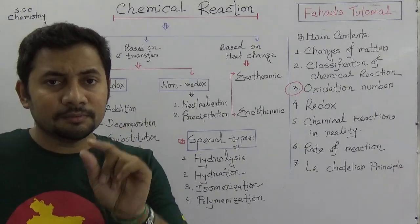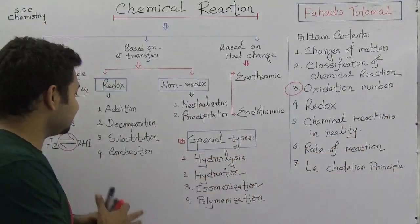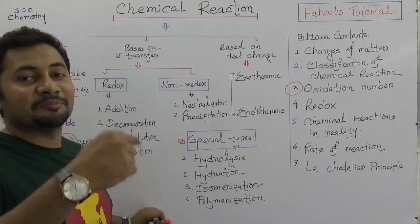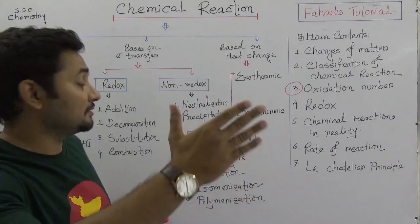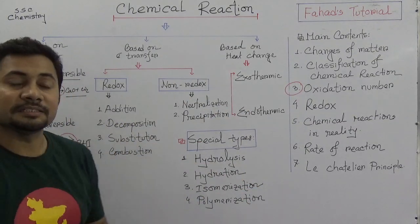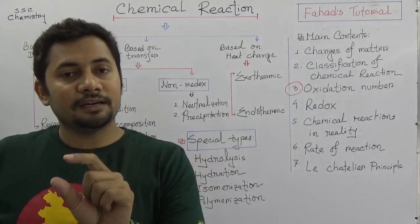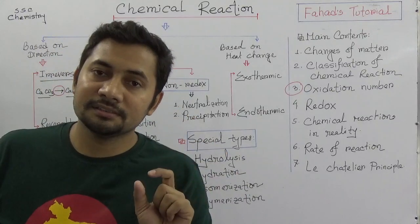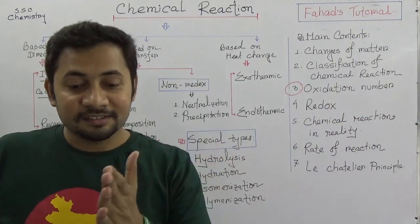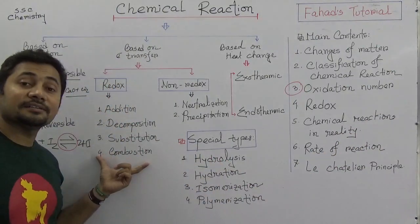For substitution, for example when zinc reacts with sulfuric acid and produces zinc sulfate and hydrogen — hydrogen is the substitute, so this is a substitution reaction. Combustion means it is actually one type of oxidation: anything reacting with oxygen. For example, carbon reacting with oxygen produces carbon dioxide; sulfur reacting with oxygen produces sulfur dioxide; nitrogen reacting with oxygen produces nitrogen dioxide. That is called combustion.